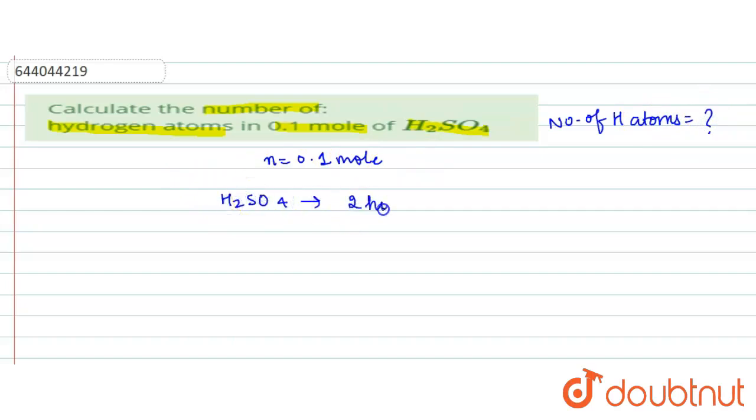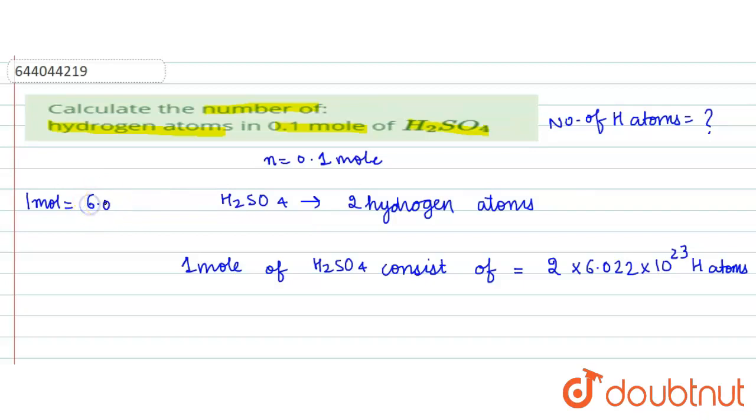So in H₂SO₄ molecule there are two hydrogen atoms. And one mole of H₂SO₄ consists of 2 × 6.022 × 10²³ hydrogen atoms, because one mole equals 6.022 × 10²³ atoms.